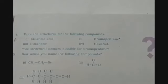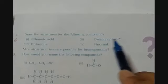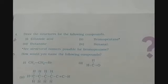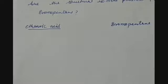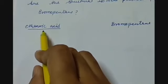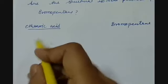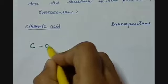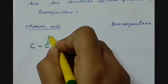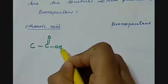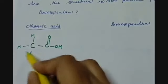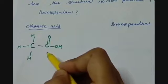At page number 69 we have another question: draw the structure for ethanoic acid, bromopentane, butanone, and hexanal. For ethanoic acid, the name tells us there are 2 carbons and the oic acid suffix indicates a carboxylic acid functional group — COOH. The carboxylic acid carbon is COOH and the rest of the valencies are fulfilled by hydrogens, completing the valency of both carbon atoms.